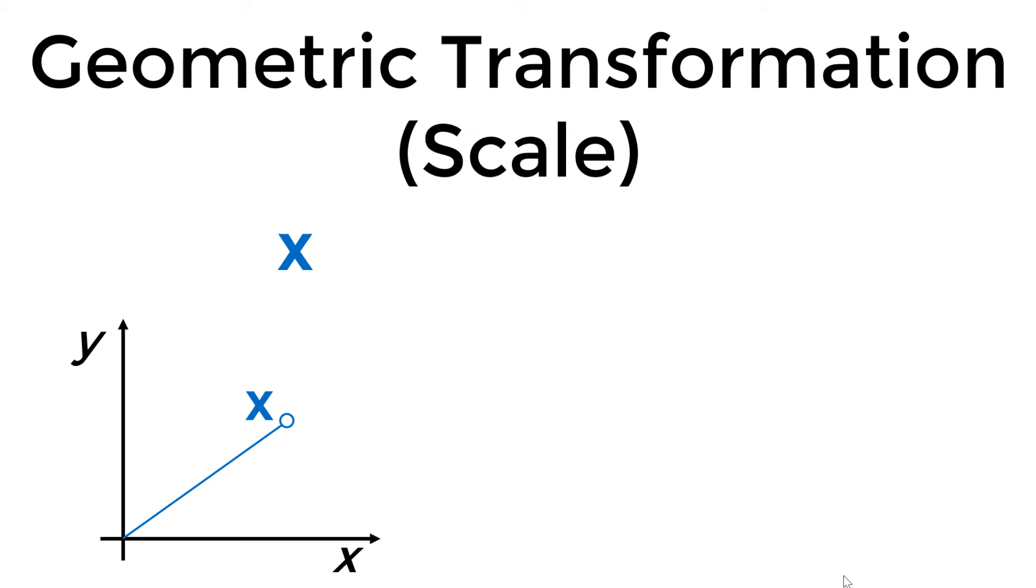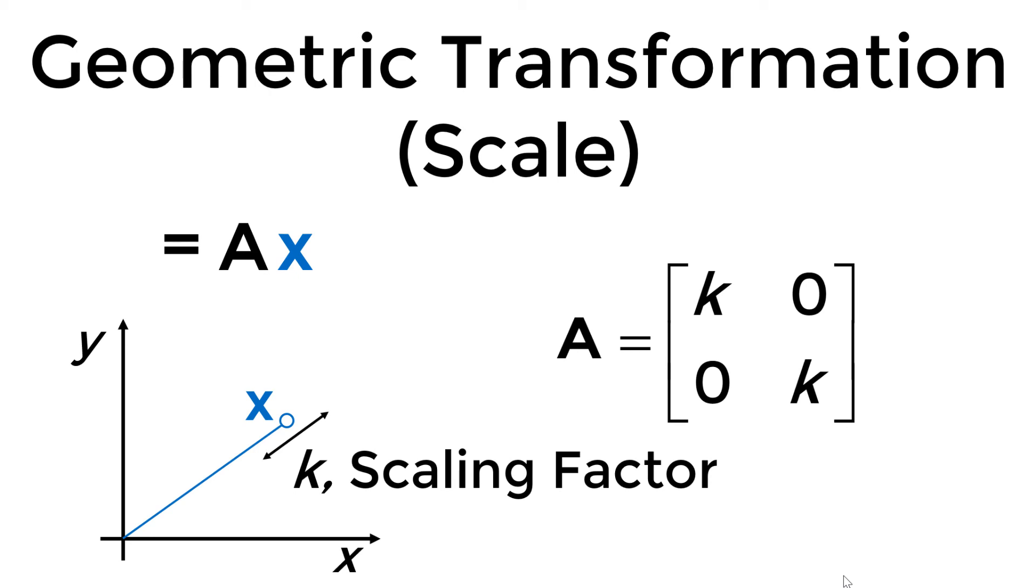For the image scale, the transformation matrix A is given as scaling parameter k in the diagonal element and 0 in the off-diagonal element. If k is larger than 1, the point x will be stretched, and if k is smaller than 1, it will shrink.